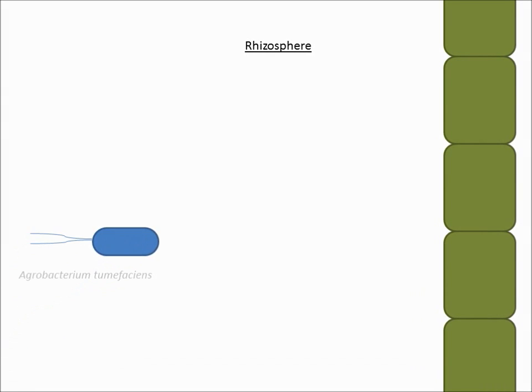Agrobacterium tumefaciens is a soil-dwelling bacterium which resides in the rhizosphere and utilizes nutrients from the plant to survive. However, if the plant is damaged, the agrobacterium moves to the site of injury via chemotaxis as a response to chemoattractants released by the injured cells.